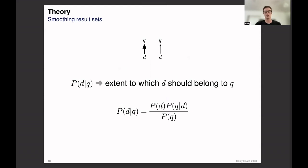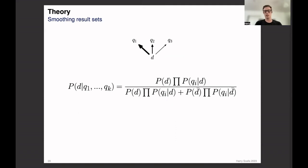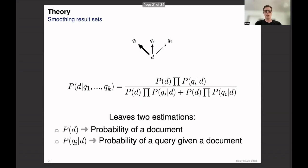So let's go into some details for how we could do this. At our most basic level, we'd like to compute the extent to which a document should belong to a query. And we can model this as the probability of a document given a query. But in the example from a few slides ago, we actually had multiple queries for a single document. And so we'd like to be able to calculate the extent to which all of these queries contribute to this document being retrieved. And when we model it like this, it leaves two estimations: the probability of the document and the probability of a query given a document.